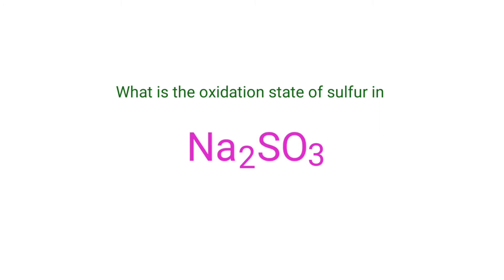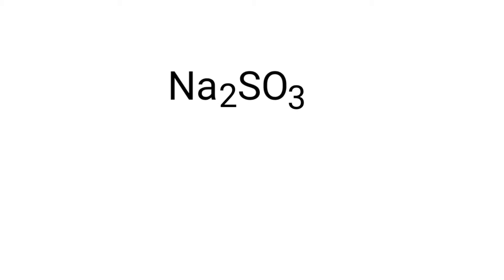What is the oxidation state of sulfur in sodium sulfite? We can use the oxidation number rules to determine oxidation numbers. Sodium sulfite is a neutral compound with overall oxidation number 0. Therefore, we know that the sum of the oxidation numbers of the atoms is equal to 0.